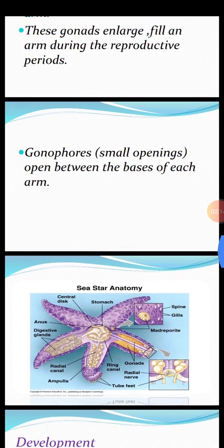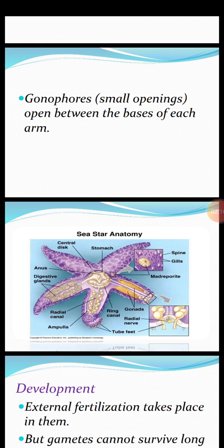You can now see the sea star anatomy and internal structure. The central disc is shown, along with the stomach and arms. Also visible are the radial canal, ring canal, madreporite, and gonads — all clearly labeled in the diagram.